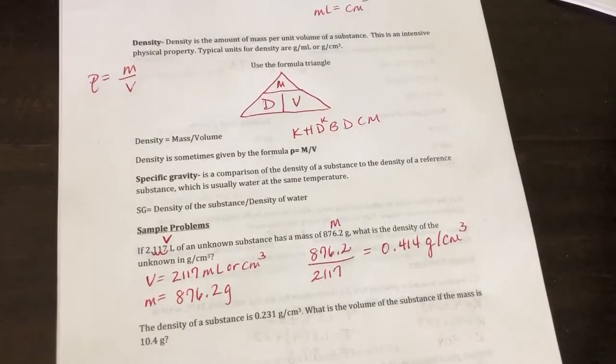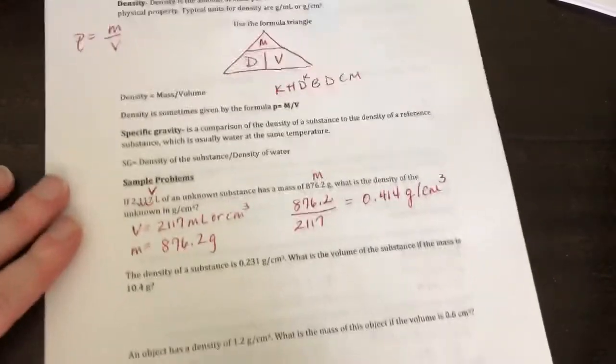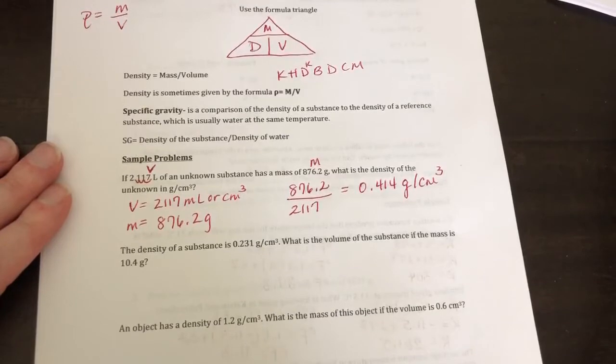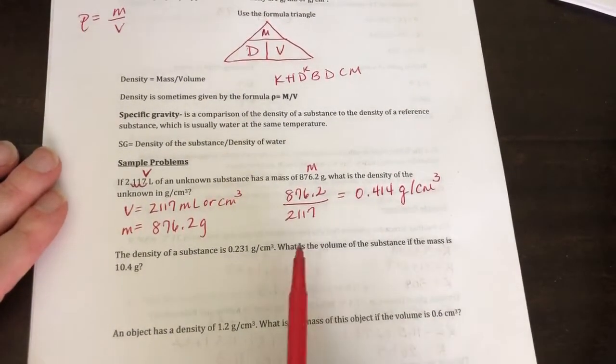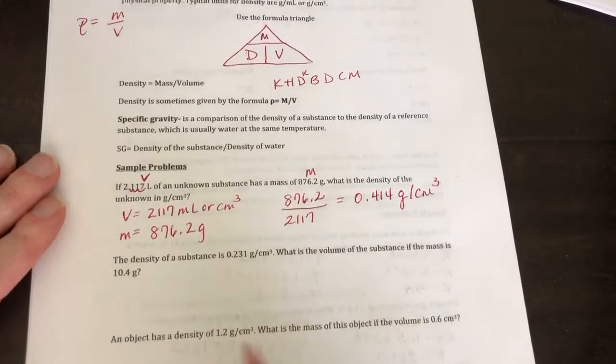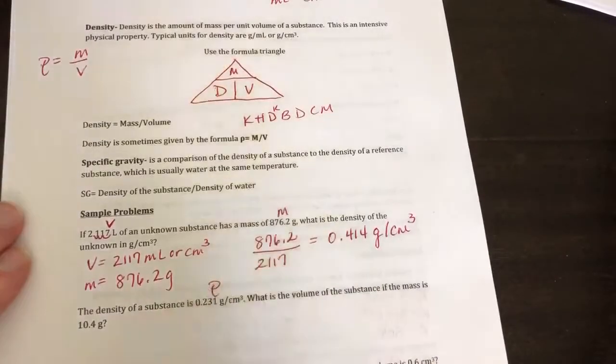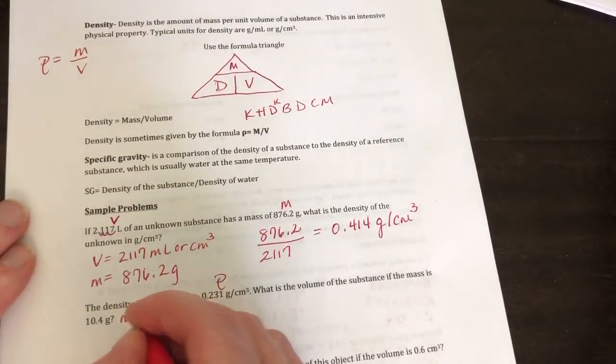Okay, next question. It says, the density of a substance is given as 0.231 grams per centimeter cubed. What is the volume of the substance if the mass is 10.4 grams? Okay, so what is the volume? I'm looking for volume. So this is my density and this is going to be my mass because it's in grams.